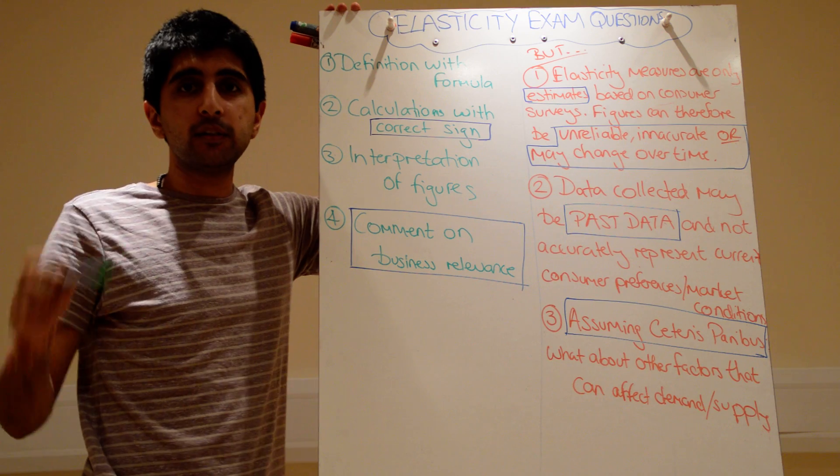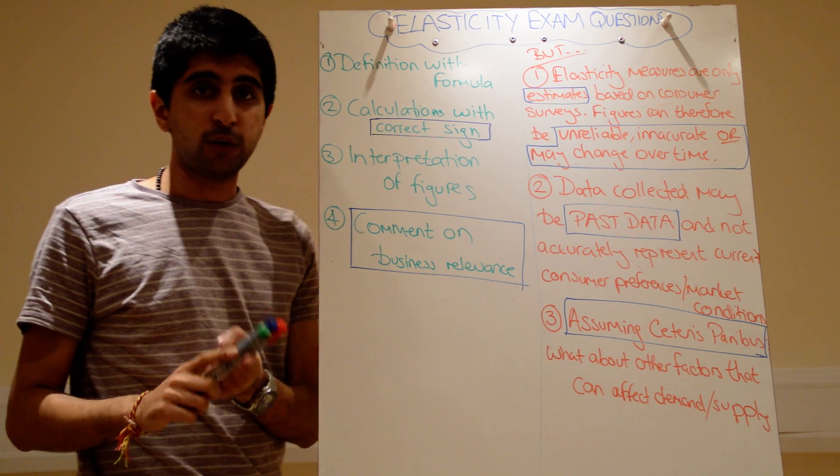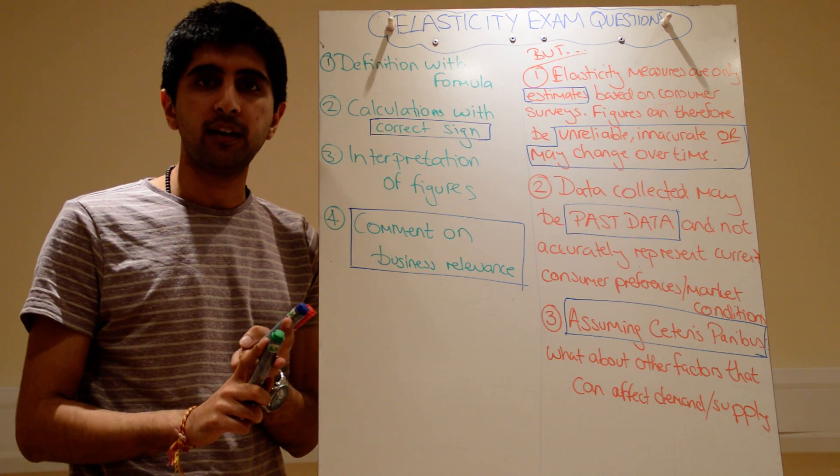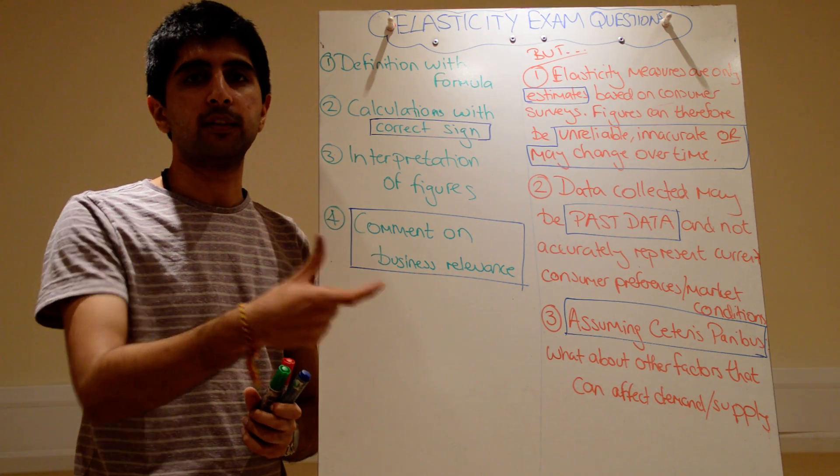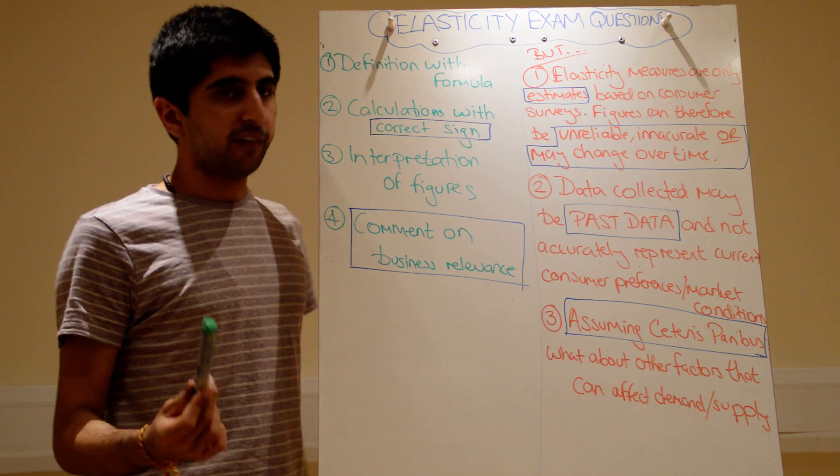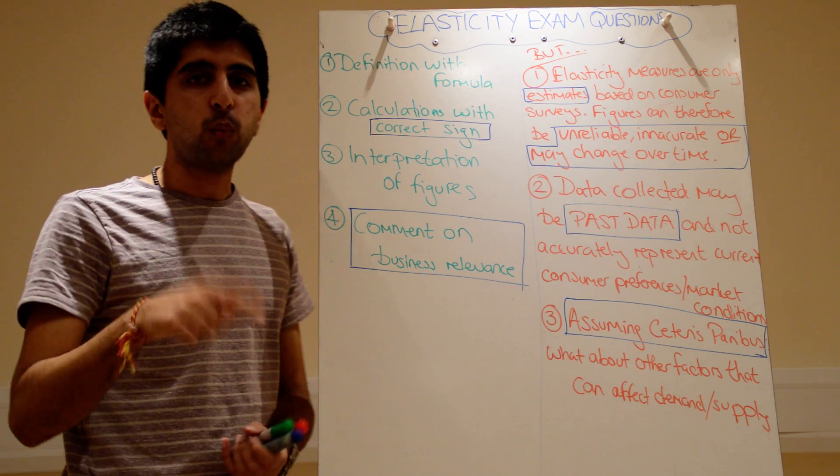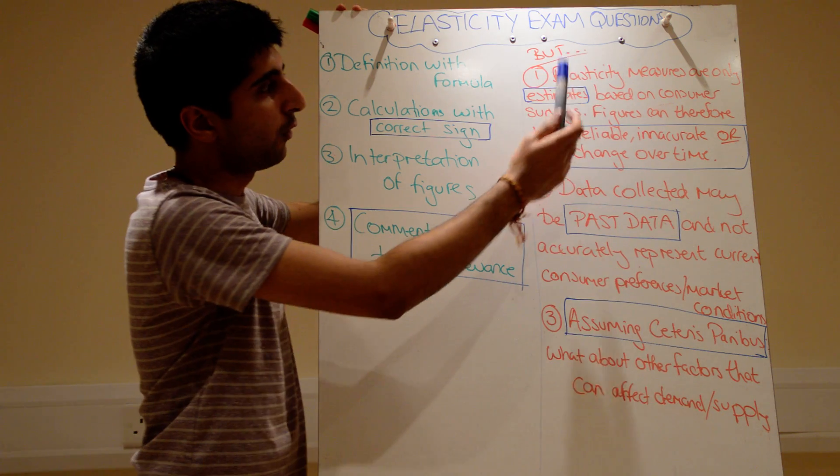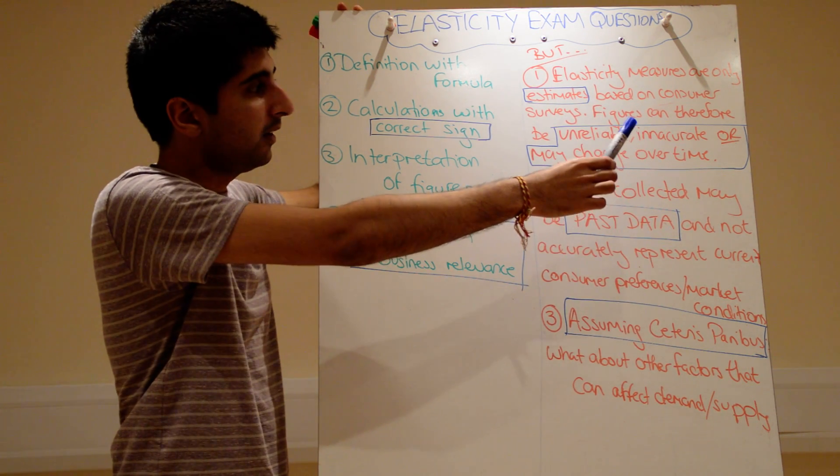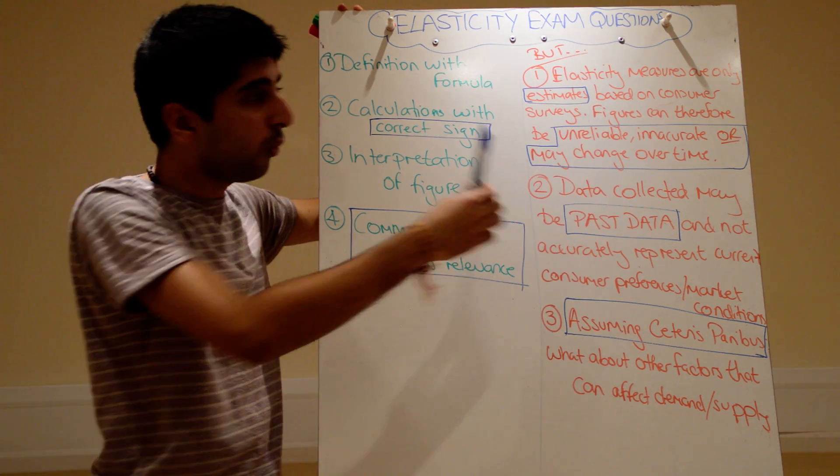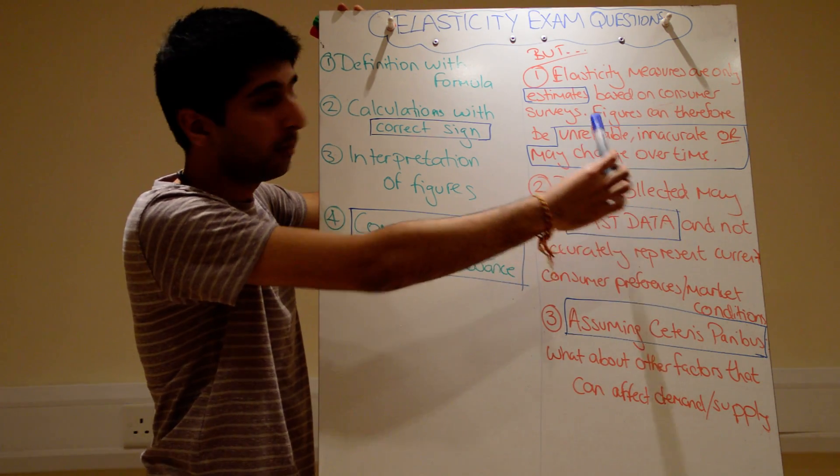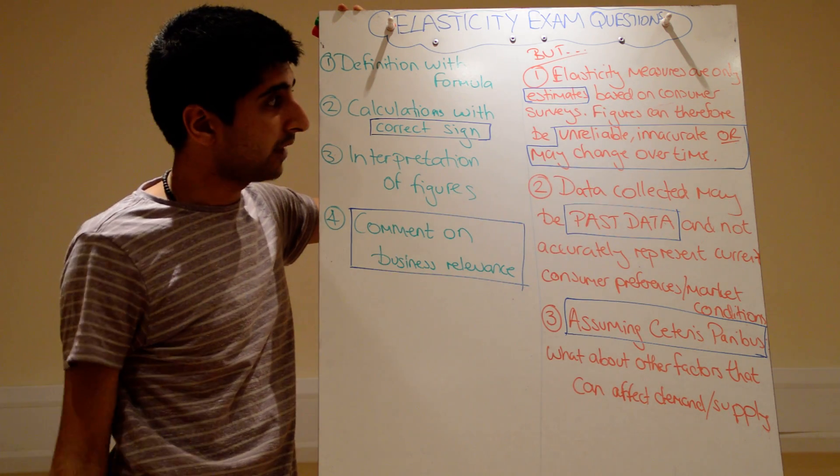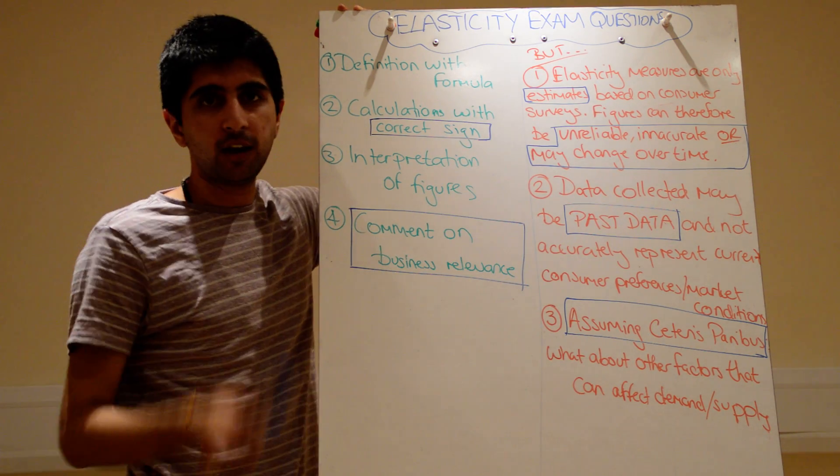First of all, elasticity measures can only ever be estimates because of the way data is collected. Remember, to work out elasticity values properly, you need accurate data on prices, which might be fine because firms are in control of that. But you need really accurate data on quantity demanded or quantity supplied. Which is much more difficult to grasp, especially if you're looking at future quantity demands and future quantity supplied. That's hard to work out perfectly. So, therefore, measures are only ever going to be estimates. And because of that, the figures generated can therefore be unreliable, inaccurate, or they may change over time. Stick each one of these three in. Normally, examiner sees unreliable, tick, inaccurate, tick. So, stick these words in. Measures can only ever be estimates, figures can only ever be estimates. Therefore, they might be unreliable, inaccurate, or they may change over time. Get that in there straight away.